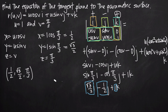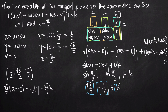Now we write the equation of the tangent plane using the standard form. The slopes in the x, y, and z directions are √3/2, −1/2, and 1 respectively. Using the coordinate point (1/2, √3/2, π/3), the equation is: (√3/2)(x − 1/2) + (−1/2)(y − √3/2) + 1·(z − π/3) = 0. You can use this standard form every time, plugging in the normal vector components and the coordinate point.